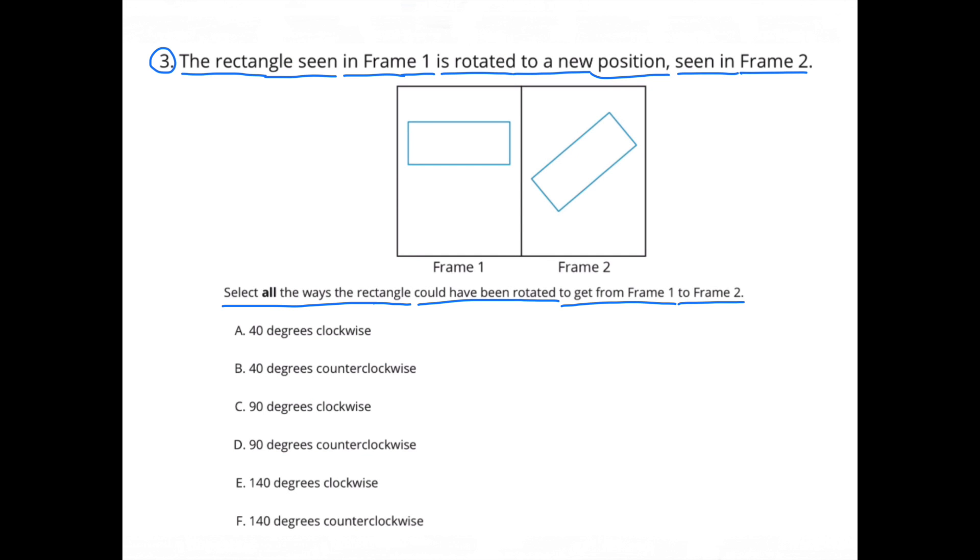Number 3. The rectangle seen in frame 1 is rotated to a new position, seen in frame 2. Select all the ways the rectangle could have been rotated to get from frame 1 to frame 2.